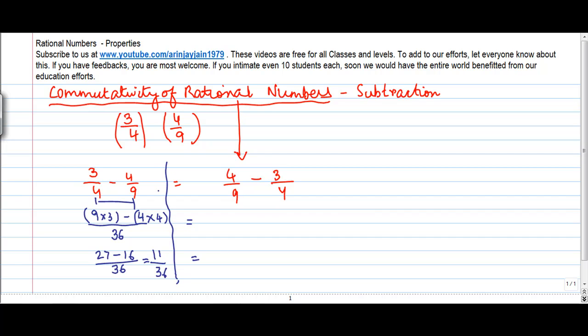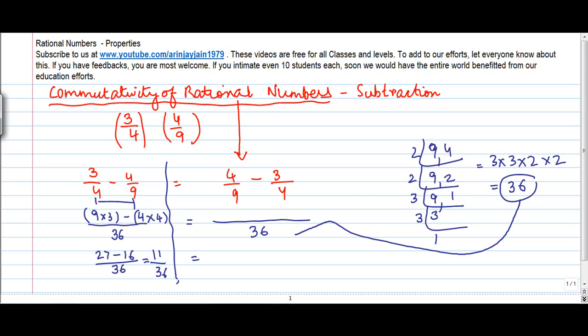Now let me solve the right-hand side. Again, 9 and 4, the least common multiple is 36. You can do this calculation at your end also, or let me do it for you. So it is 3 into 3 into 2 into 2, which is 9, 18, 36, which I took and kept here.